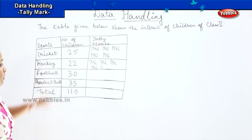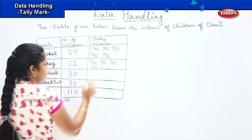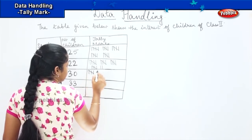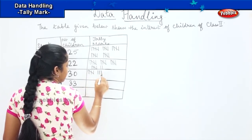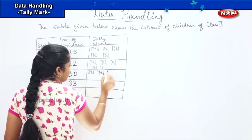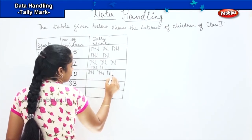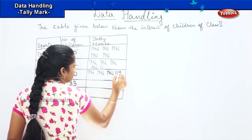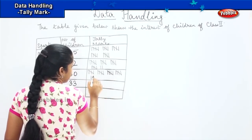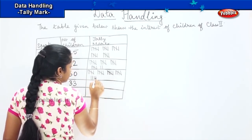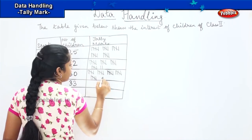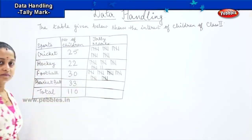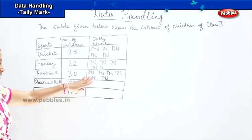The next one says 30 for football. 1, 2, 3, 4, slanting 5, 6, 7, 8, 9, slanting 10, 11, 12, 13, 14, slanting 15, 16, 17, 18, 19, slanting 20, 21, 22, 23, 24, 25, 26, 27, 28, 29, 30. Clear?